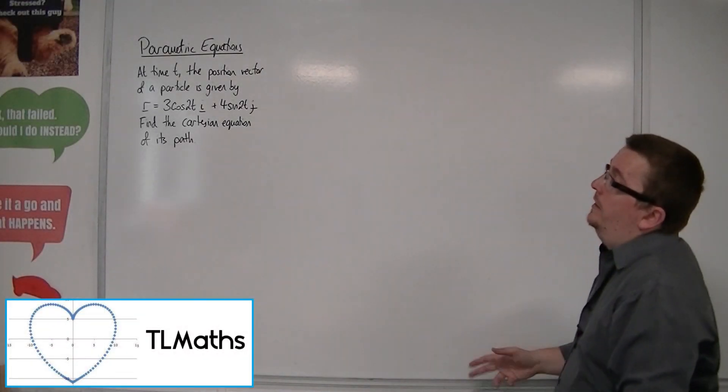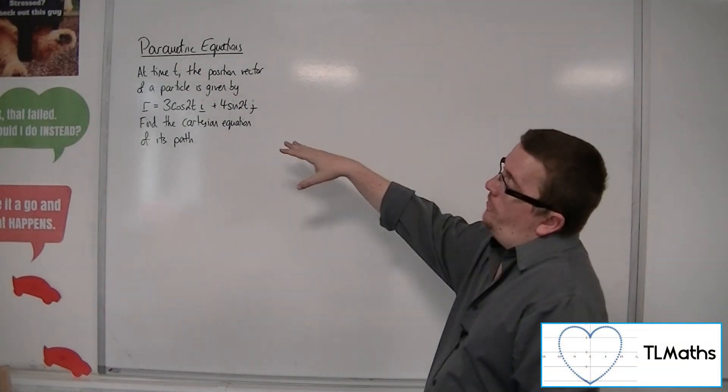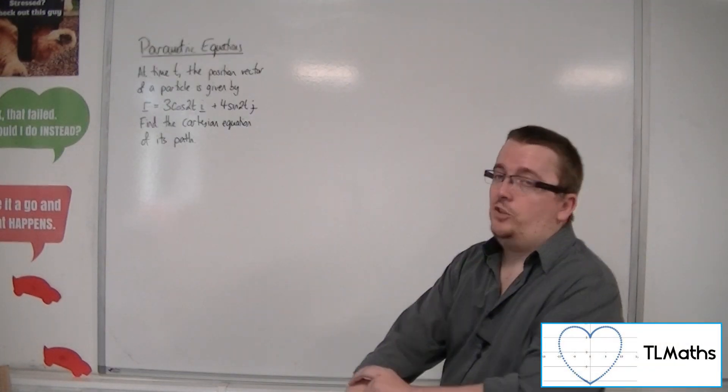So let's say that at time t, the position vector of a particle is given by r equals 3 cos 2t i plus 4 sine 2t j.